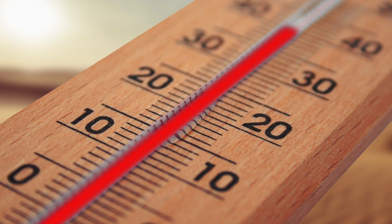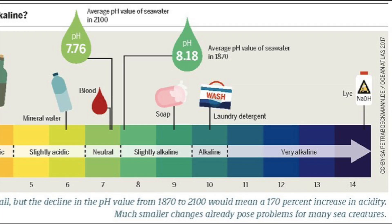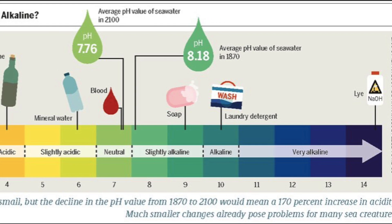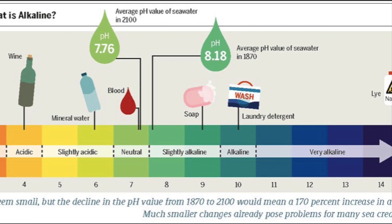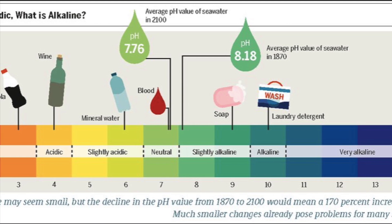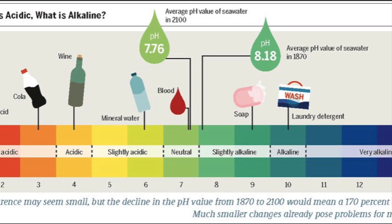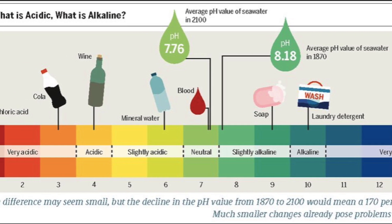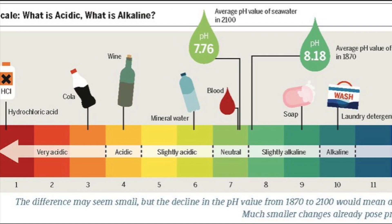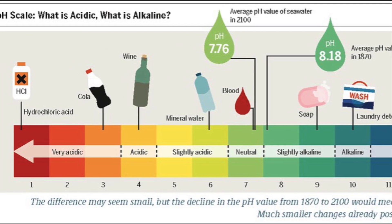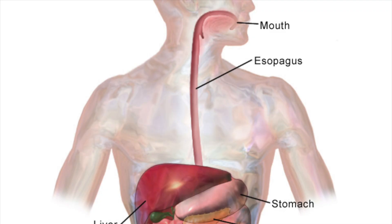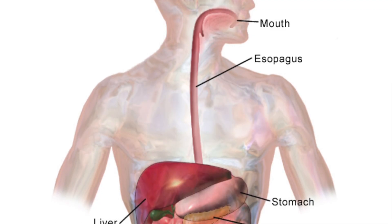pH is another factor that can affect enzyme action. If the pH is either too low or too high, the enzyme is denatured. All enzymes have an optimum pH around neutral pH 7; however, some, like pepsin in the stomach, work best at pH 2, which is obviously very acidic.